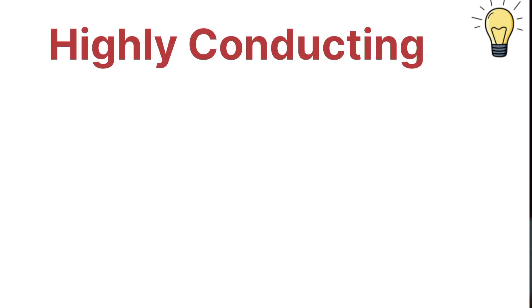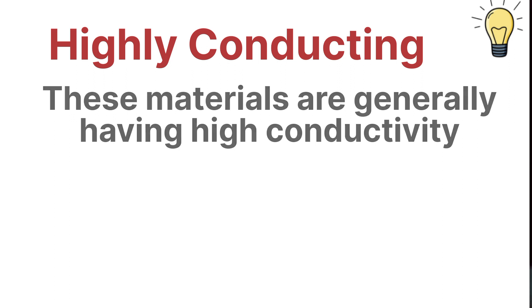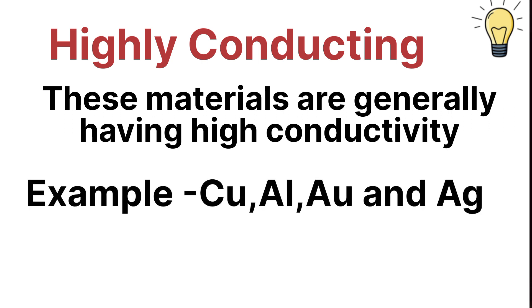Highly conducting materials are generally having high conductivity and these materials are very importantly used in the electrical system. Examples of highly conducting materials are copper, aluminum, gold, and silver. These materials are very importantly used in the electrical system.